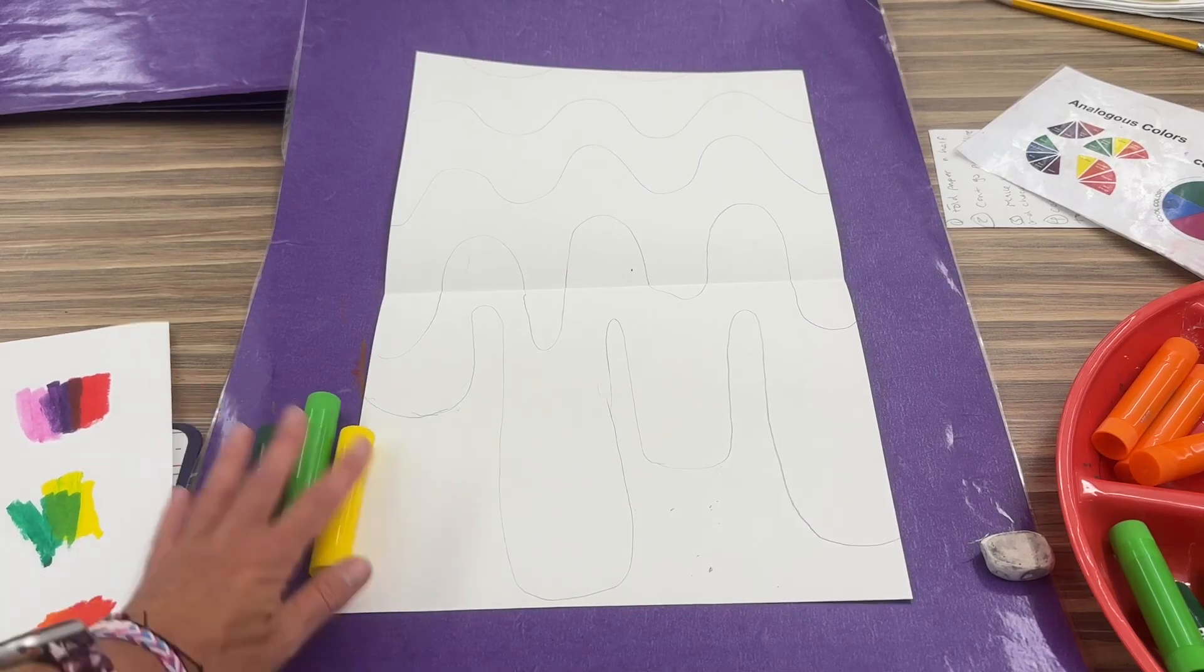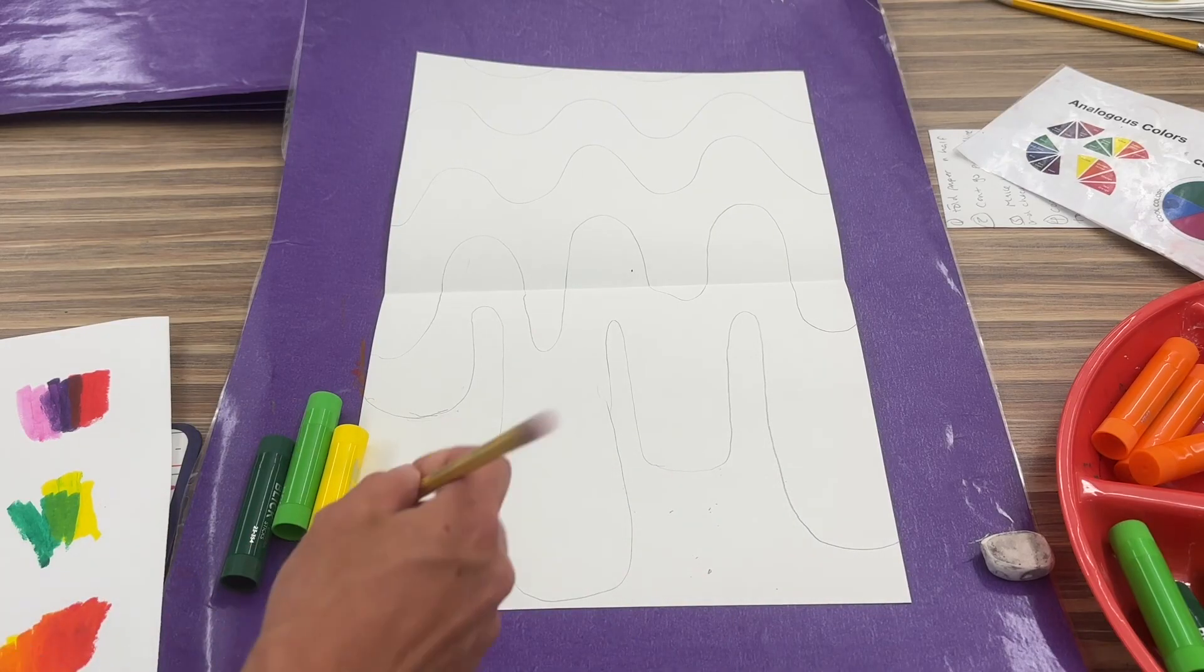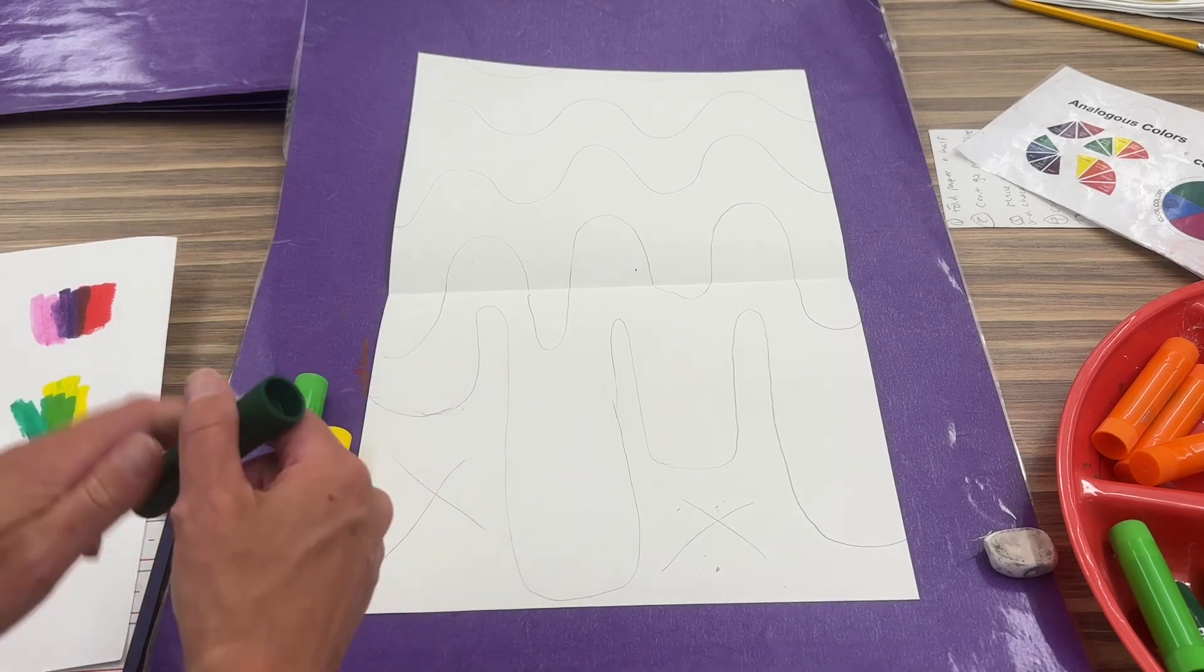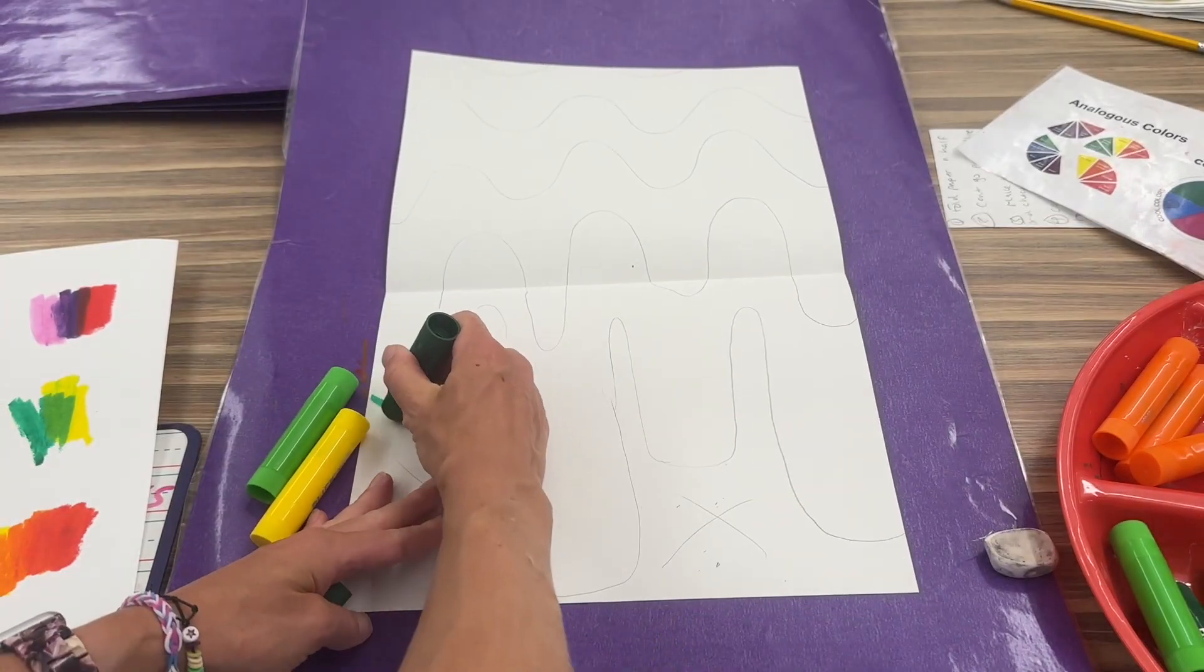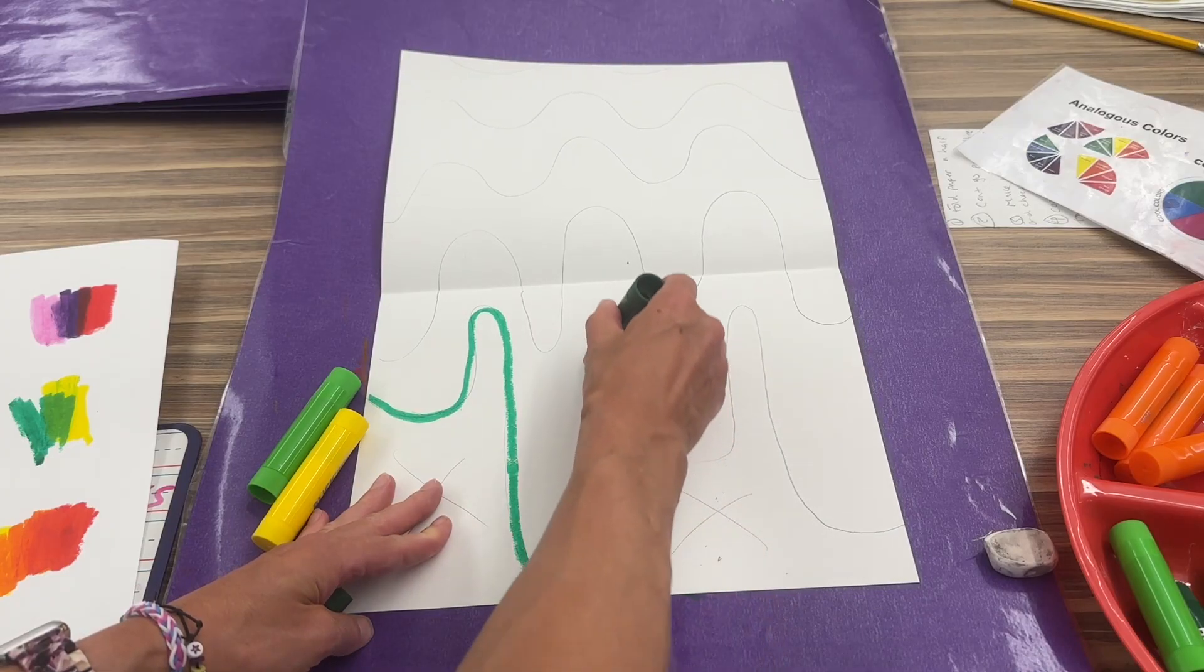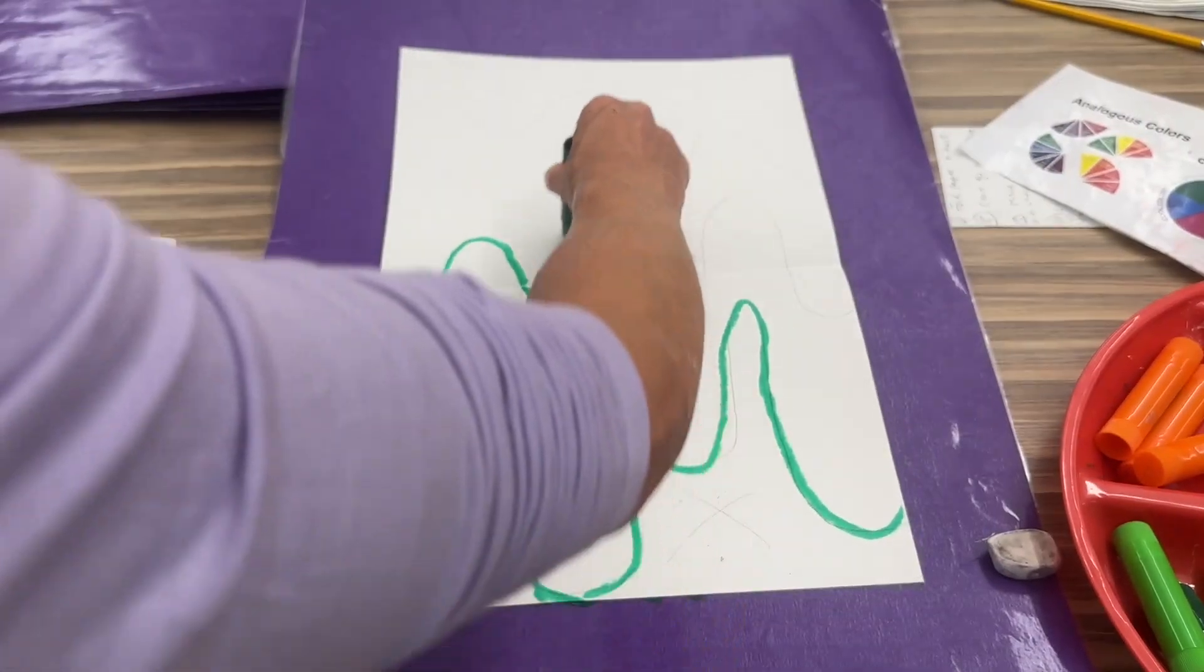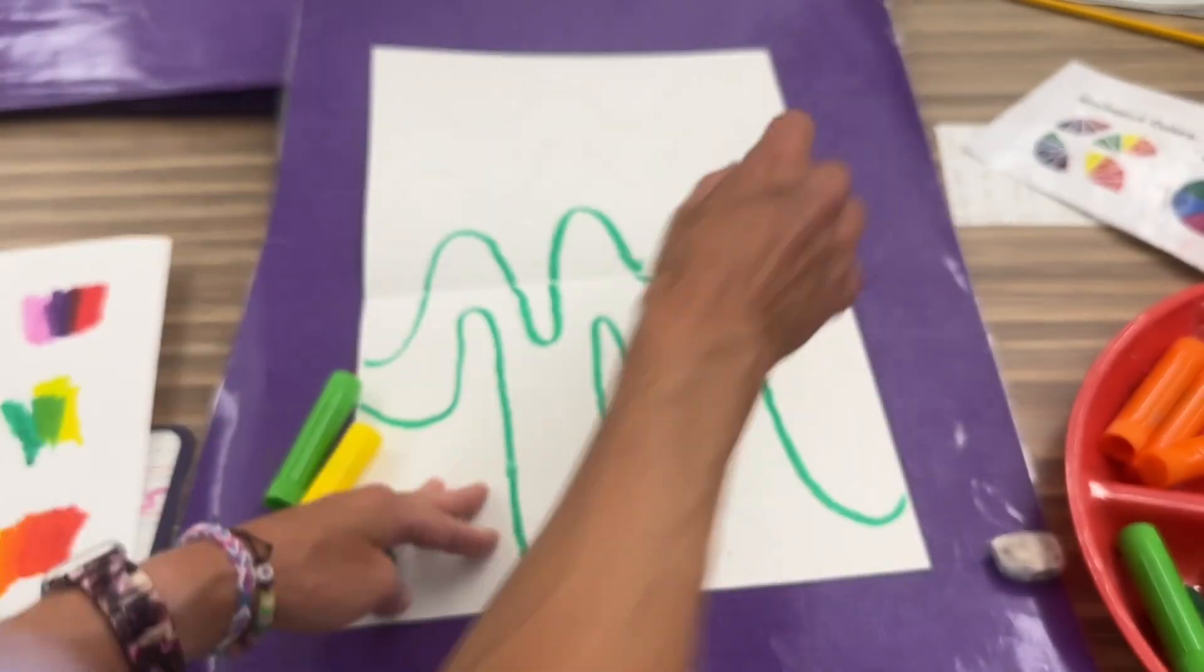The first one I'm gonna do is green. And when you're using these, roll it up just a little bit. I like to outline where I'm gonna color because then I can color a little faster and still stay in the line. So once I have that, now I know this whole thing I'm just gonna fill in with green.